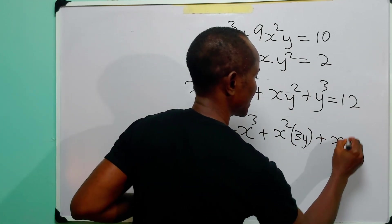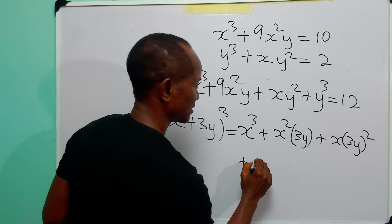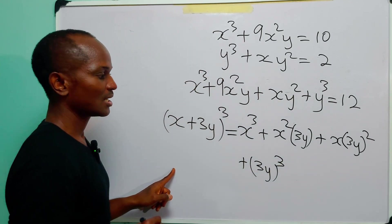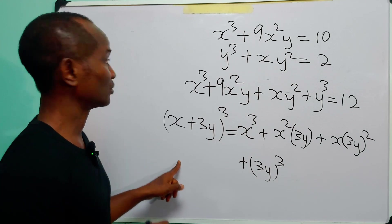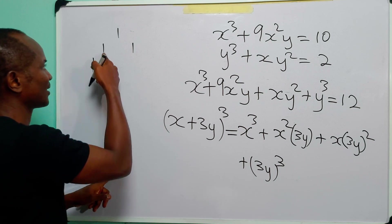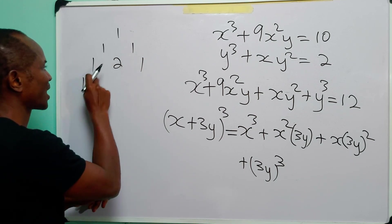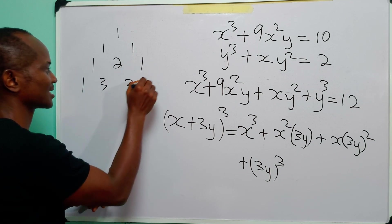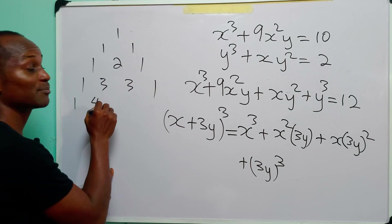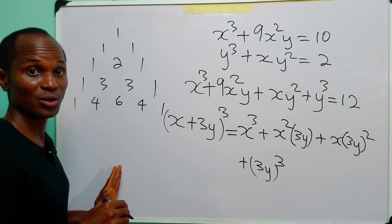Continuing the expansion: plus x·(3y)² plus (3y)³. From Pascal's triangle, the coefficients for the power-3 row are 1, 3, 3, 1.